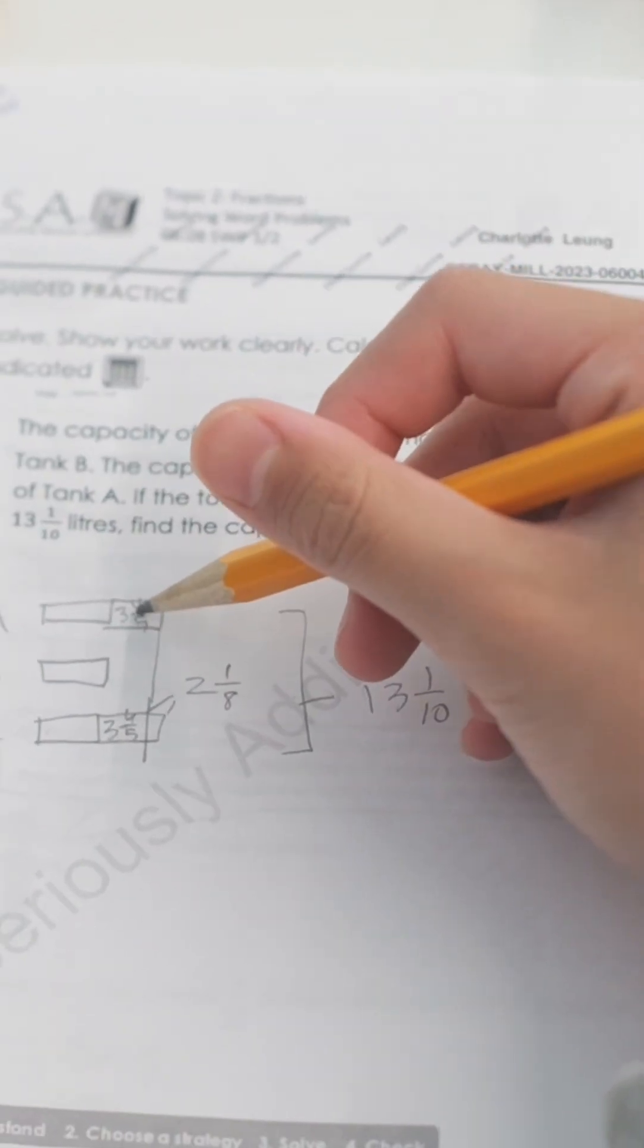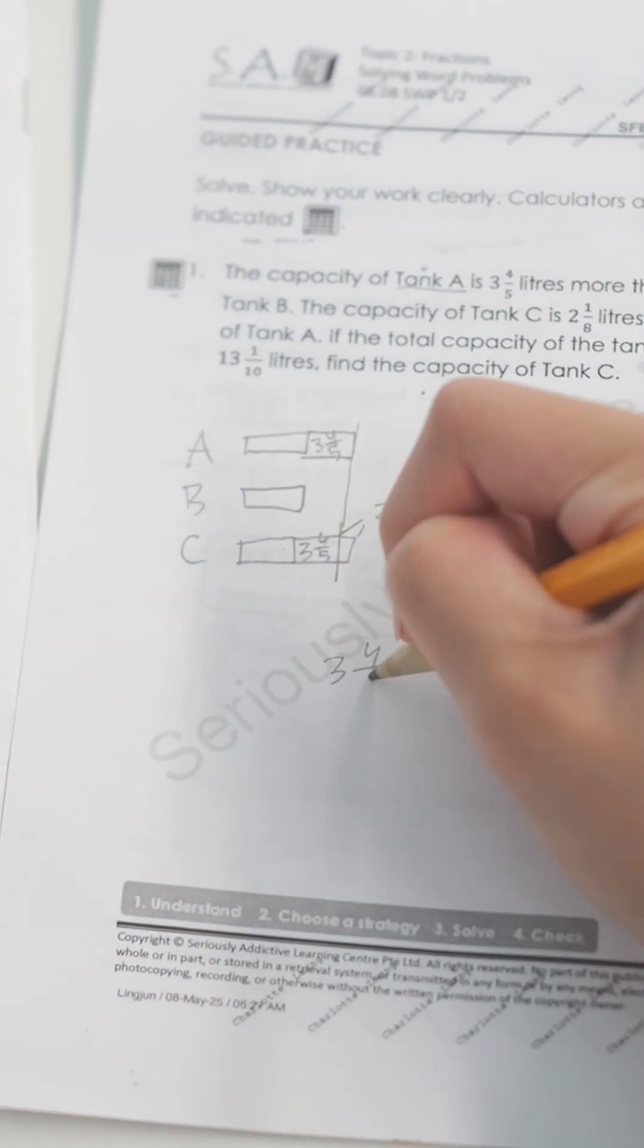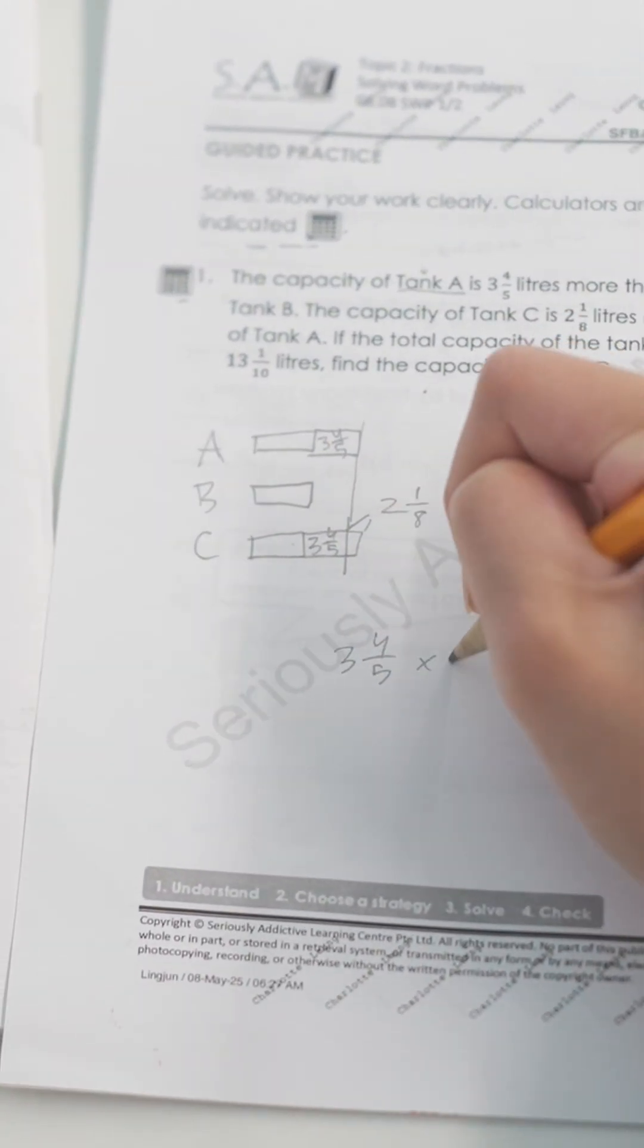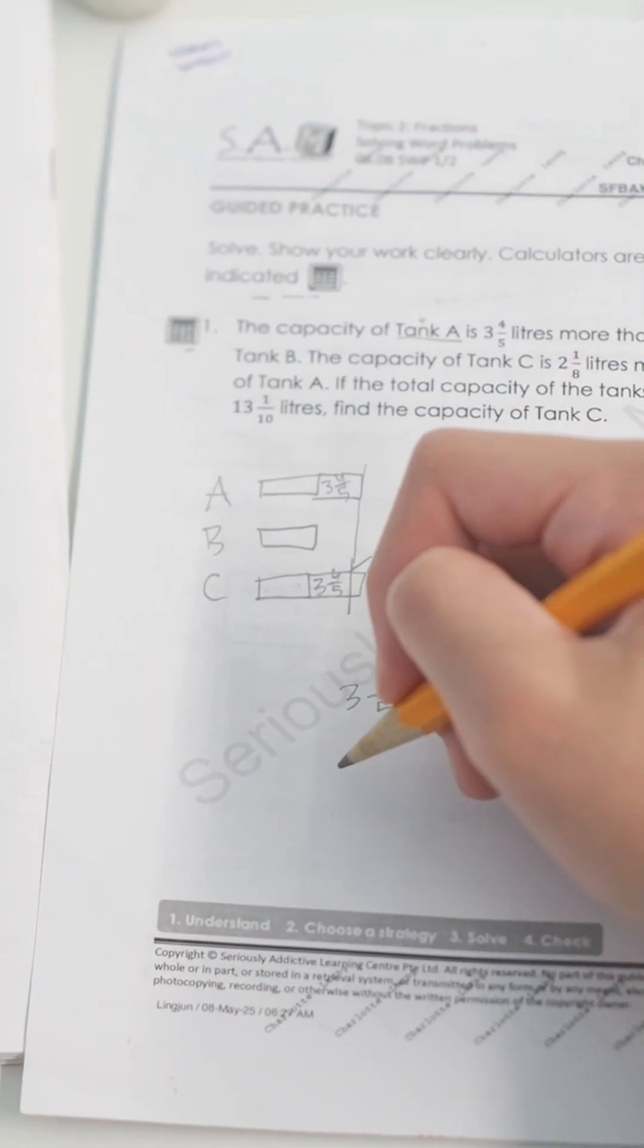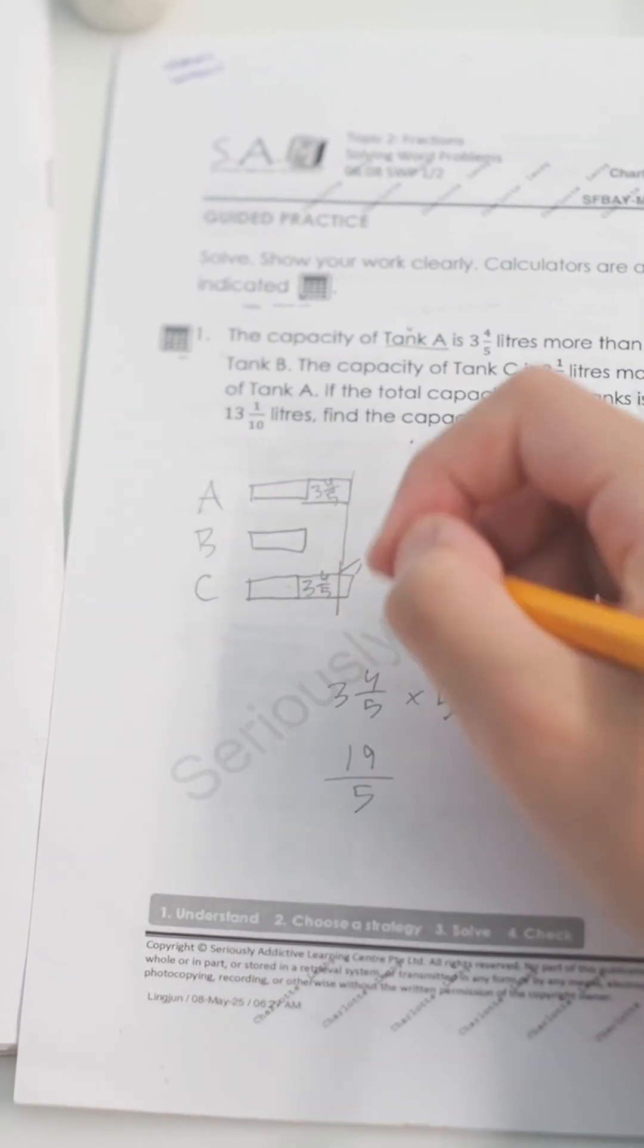When students use bar models, they can see the known and unknown quantities more clearly. This helps them understand what a question is asking and how to solve it step by step. Using bar models also builds other important skills like logical thinking, reasoning, communication, and problem solving.